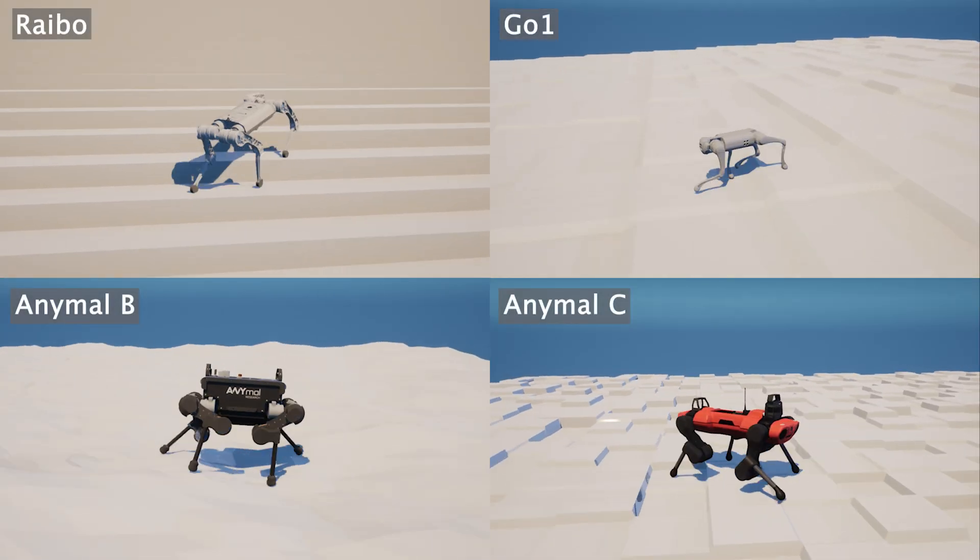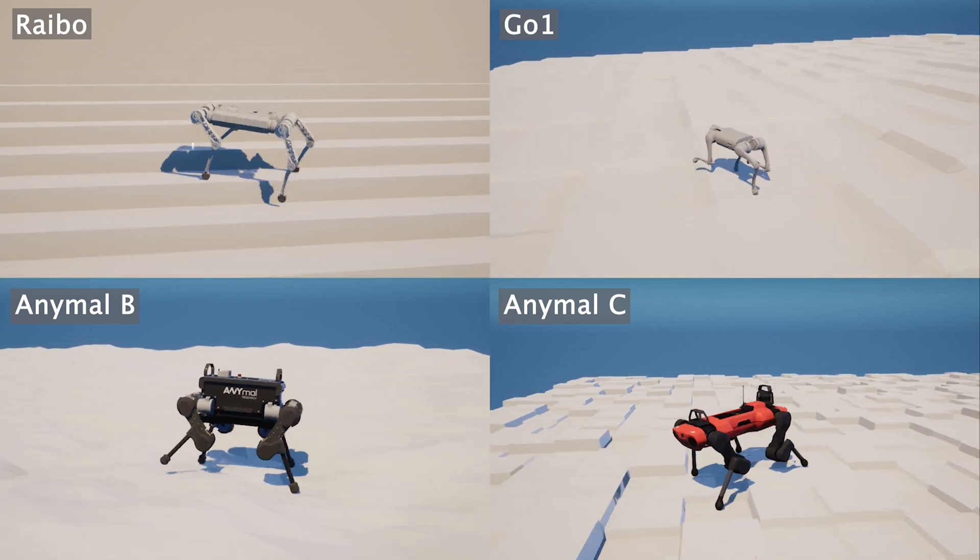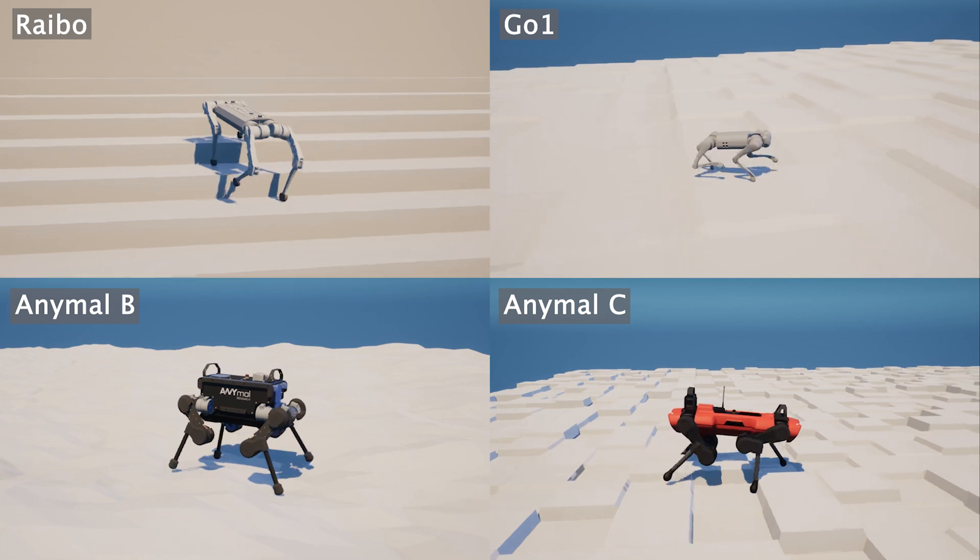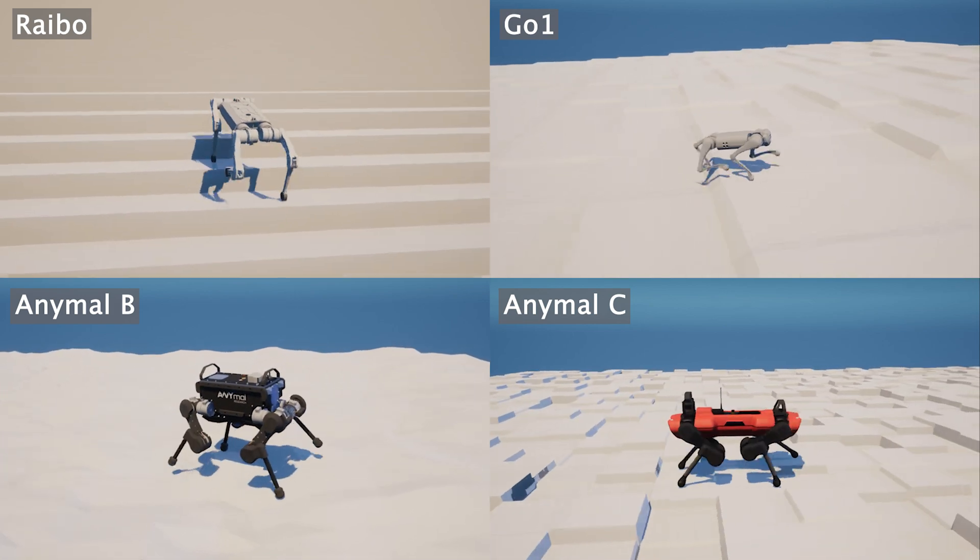The proposed framework is applied to train blind locomotion controllers for a variety of legged robots that differ in morphology and physical properties to traverse challenging terrain.